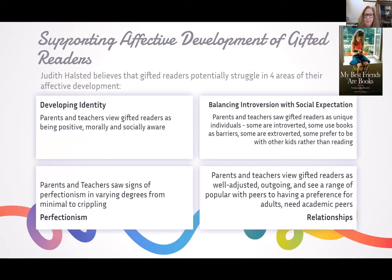I based my research around Judith Halstead's book called Some of My Best Friends Are Books. She believes that gifted readers potentially struggle in four affective areas: developing identity, perfectionism, balancing introversion with social expectations, and relationships. My research indicated that parents and teachers view gifted readers as being positive, morally and socially aware, with a positive identity overall. Some are introverted, some use books as barriers, some are extroverted. Parents and teachers view gifted readers as well-adjusted and outgoing, seeing a range from being popular with peers to having a preference toward adults.